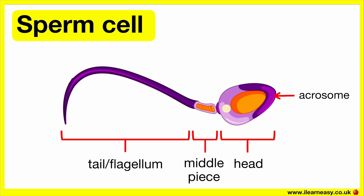Part of the tip of the head of the sperm, known as the acrosome, releases enzymes which digest the egg membrane. This is a protein coating around the egg cell which needs to be broken through to allow fertilisation to take place. The haploid nucleus contains the genetic material for fertilisation.